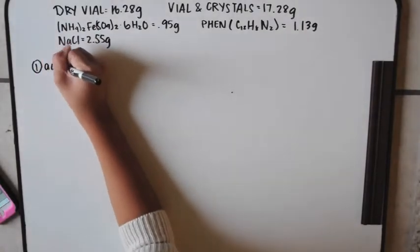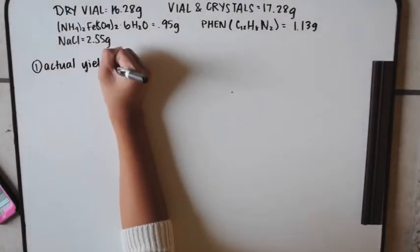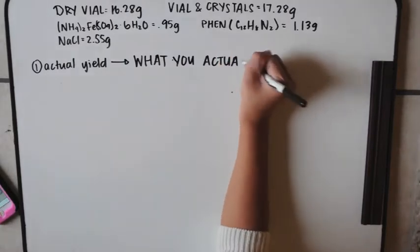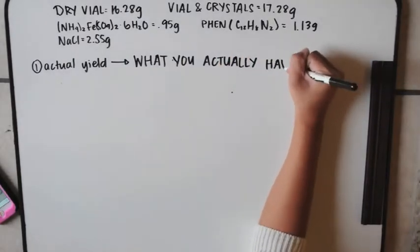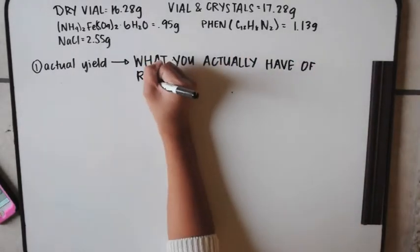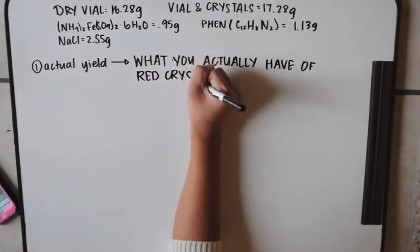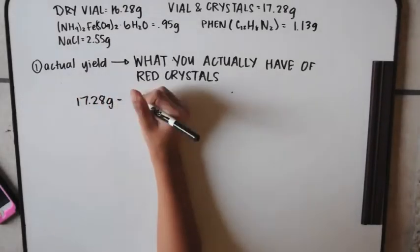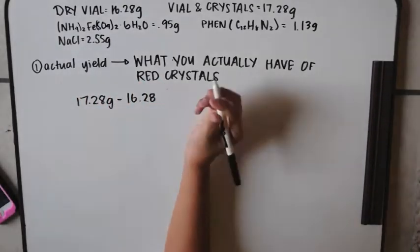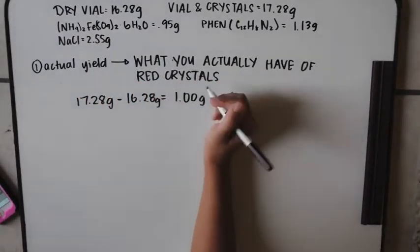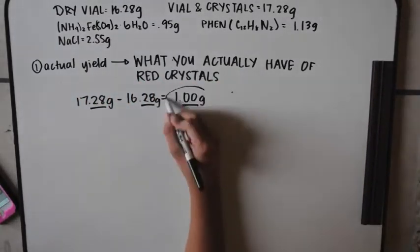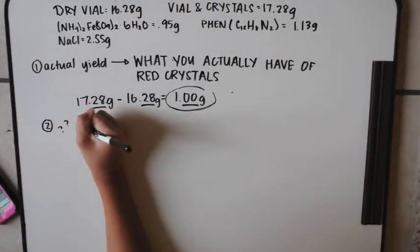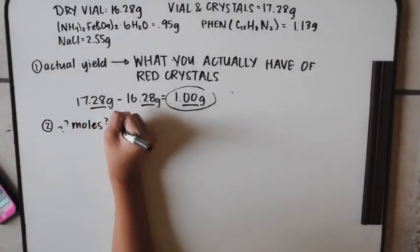Number one is asking for the actual yield, which is what you actually have of red crystals — what you recovered from your last lab. That is your vial and crystals minus your dry vial, which would be about one gram for me. Note that that would be about three sig figs, because when subtracting, you consider precision.